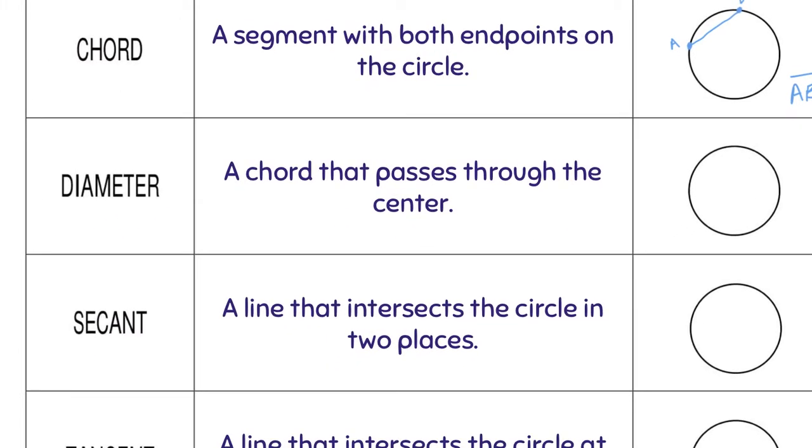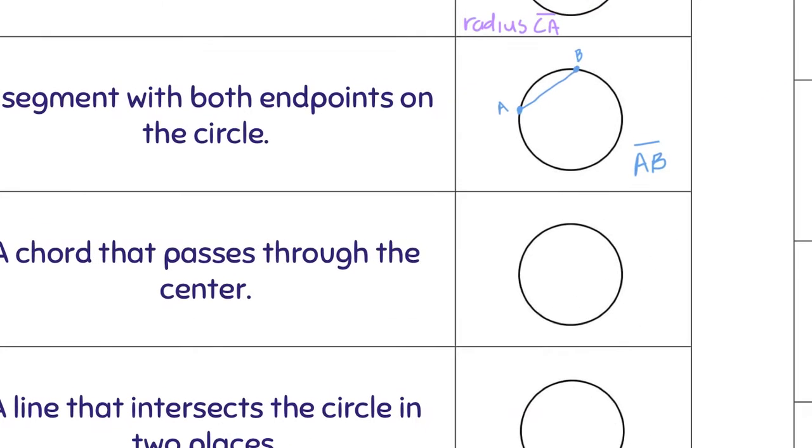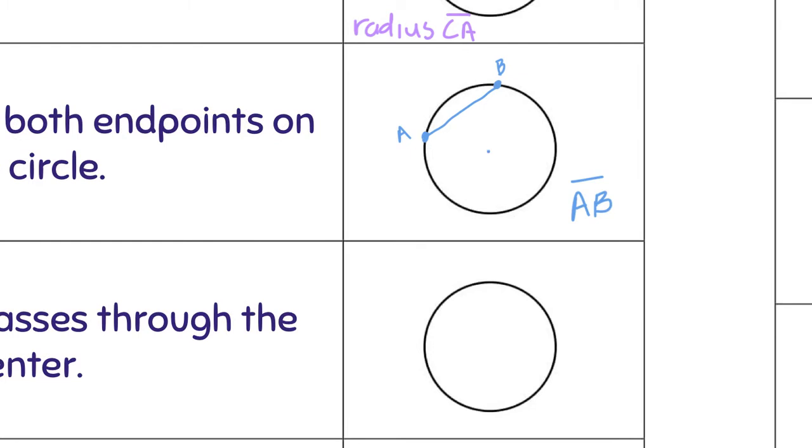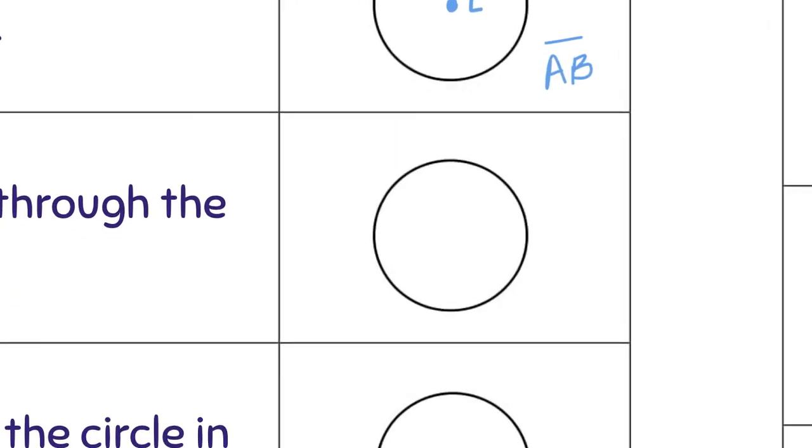Diameter. The diameter is a special type of chord that passes through the center of the circle. So over here, the center was obviously about right here. So it didn't go through the center. But if it's a diameter, here's my center. Then my two endpoints, A and B. And it would go right through the center. That would be our diameter. And again, you only have to name it with the endpoint. So A, B with a line over.